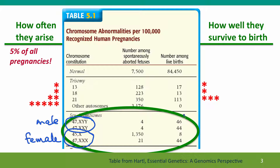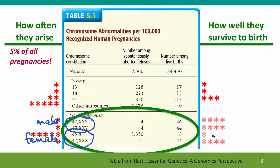The numbers among live births are moderately high. Only the monosomy X, which is Turner syndrome, has very high numbers among spontaneously aborted fetuses. I've marked again how often they arise and how well they survive to birth — we'll talk about this more in the next lecture.